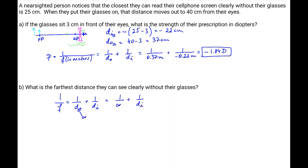Now we know that 1 over f is negative 1.84 inverse meters or diopters and that's going to be 0 plus 1 over d_i which means that d_i is 1 over negative 1.84 so we get negative 0.54 meters from the glasses.